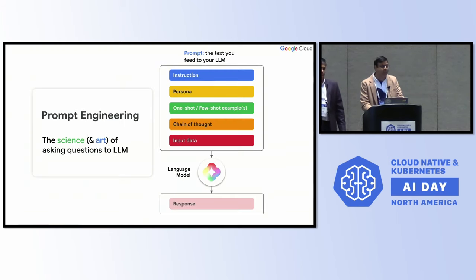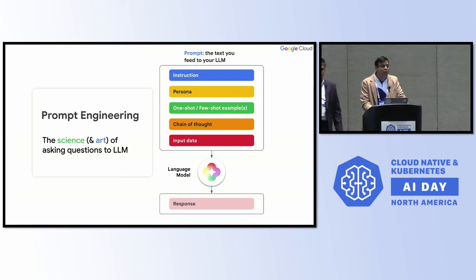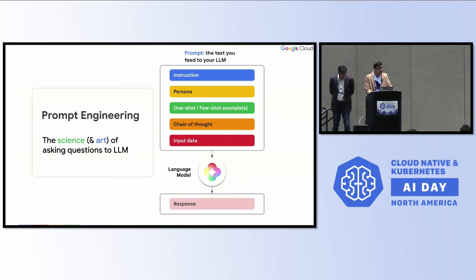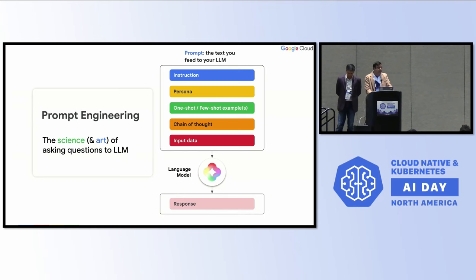What is prompt engineering? We call it art and science — because the kind of prompts you provide, the kind of feeds you give as input, you get results based on what you provide. You keep learning on it. Maybe you give one shot, or a chain of thoughts. Better the inputs available as part of the prompt, the better the output we get in response.